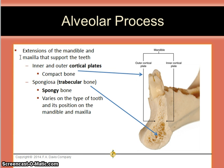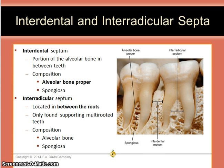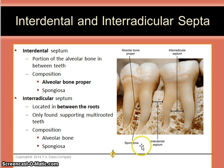Extensions of the mandible and maxilla that support the teeth are called the alveolar process. They are composed of two cortical plates — one inner and one outer — and trabecular or spongy bone. Cortical bone and compact bone are names for the same thing; spongy bone and trabecular bone are also synonymous. The interdental septum is the portion of alveolar bone between the teeth, while the interradicular septum is located between roots and is only found in multi-rooted teeth. The roots of teeth are all surrounded by alveolar bone proper.